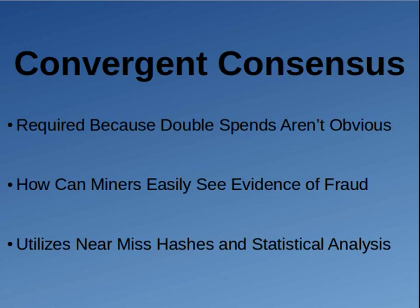Generally speaking, it's assumed that at least a majority of the hash rate is honest — you usually assume attackers don't have 51% of the hash rate. Convergent consensus relies on that as a principle in order to function. Even if you do have an attacker controlling the hash rate, there are things you can figure out.